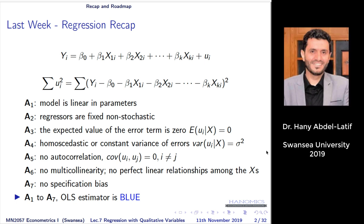When I say a model, I'm talking about the simplest form — a single equation model. Maybe next year in econometrics you'll talk about models with more than one equation, but for now we have one equation where a dependent variable is explained by a number of independent variables or regressors, and these should be the most important variables.